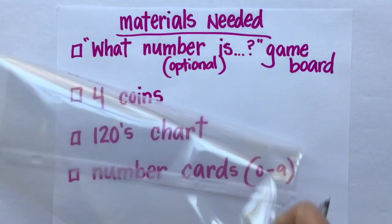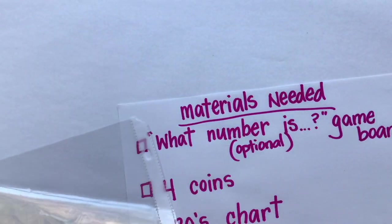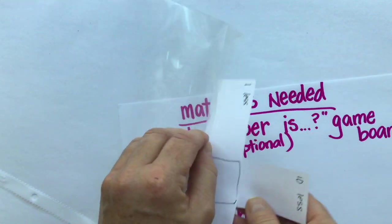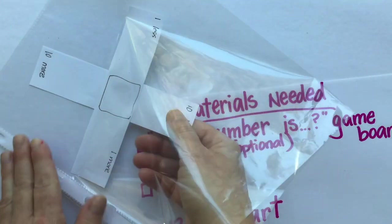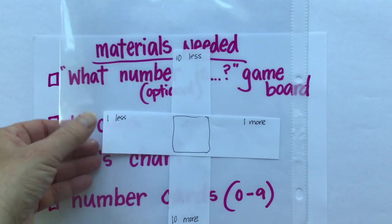I'm going to slide my game piece inside a sheet protector so that I can use it over and over. You might want to do the same or use a pencil, and you can erase each time as we use the game piece.